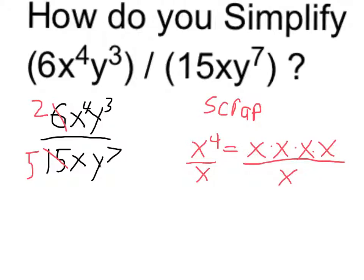On the side, let me look at the x's. x to the 4th means that I have x times x times x times x. That's just its definition. In the denominator, I have a single x. So notice what happens is that the single x cancels out with one of the x's above, leaving me with x cubed.